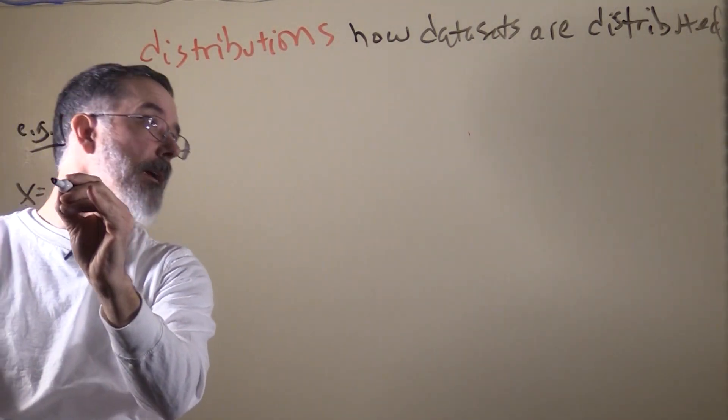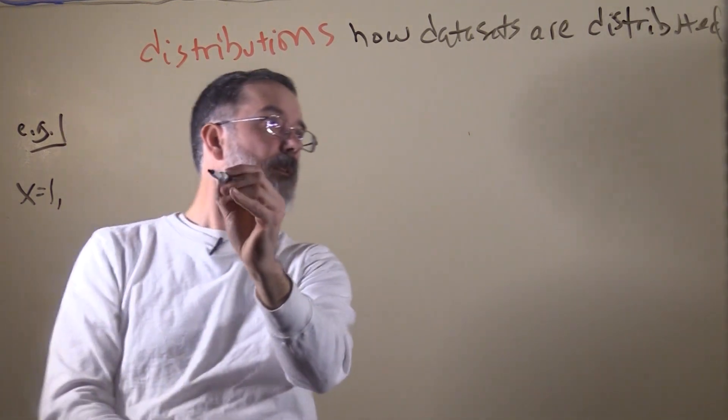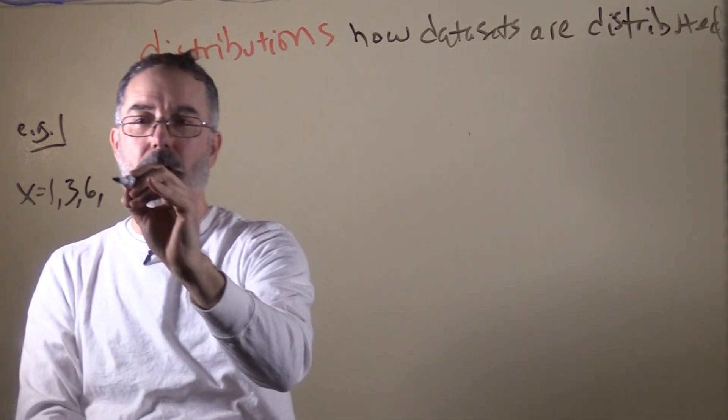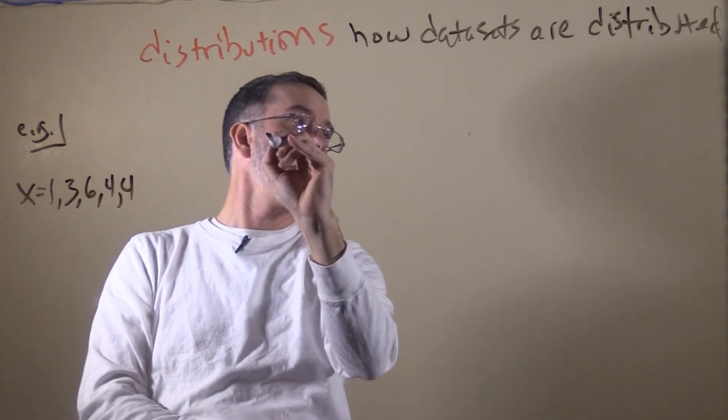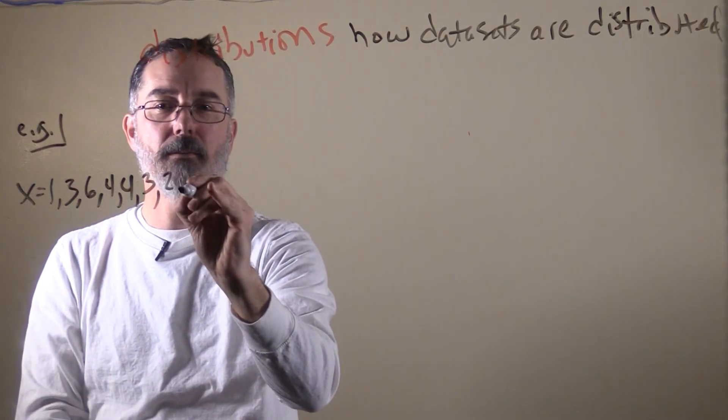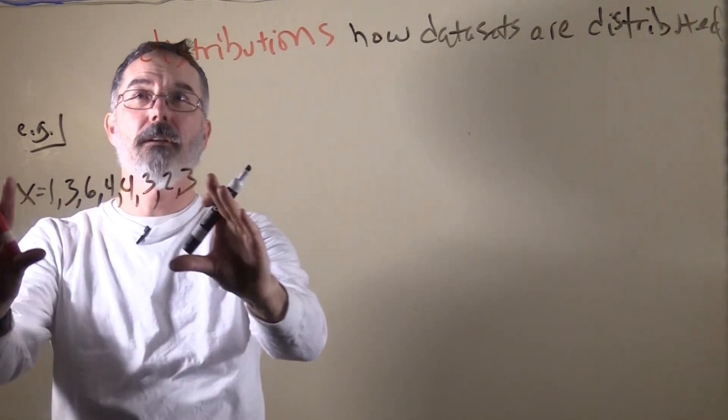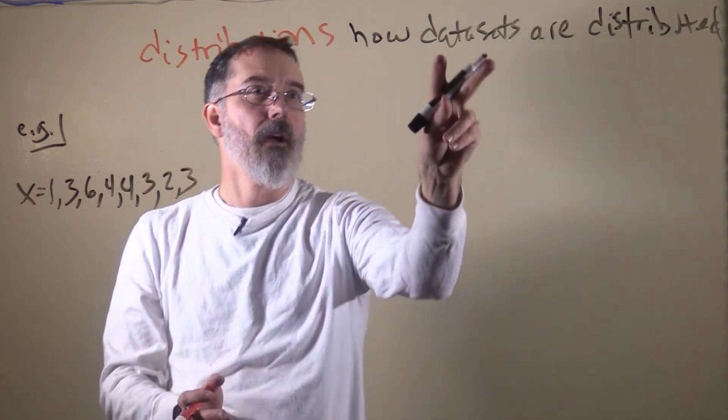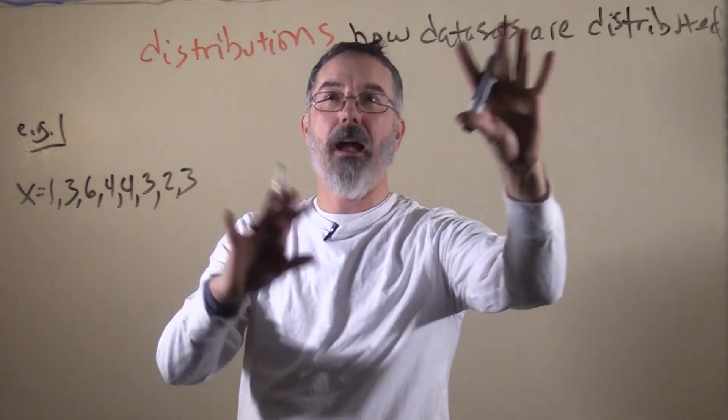One kid ate 1, another one ate 3, another kid ate 6, a couple of them ate 4, one ate 3, one ate 2, and another one ate 3. So here is our data set. And so now we want to figure out how it is distributed.